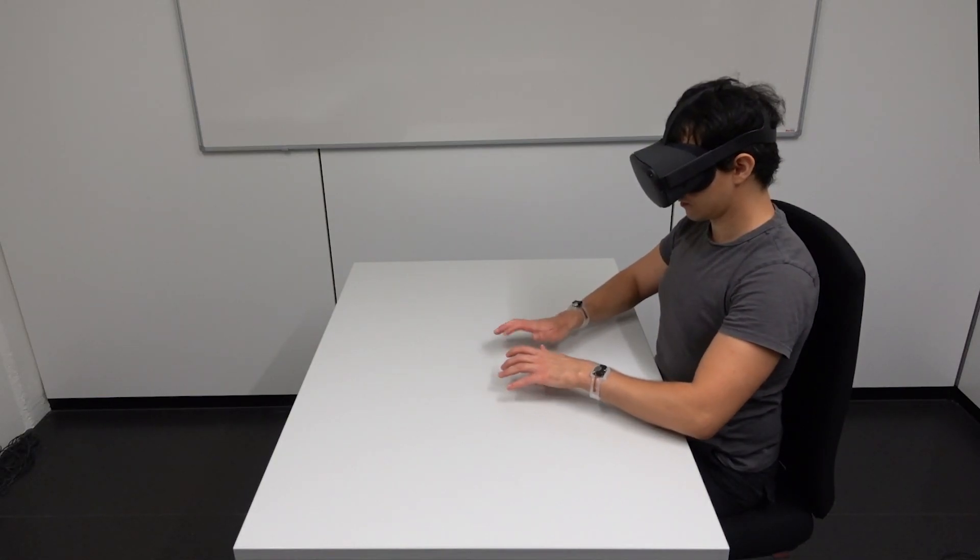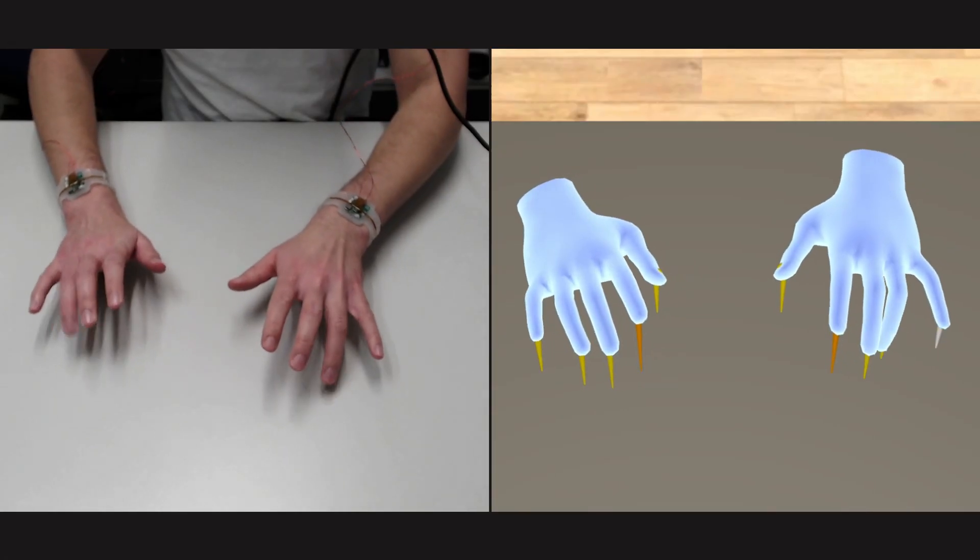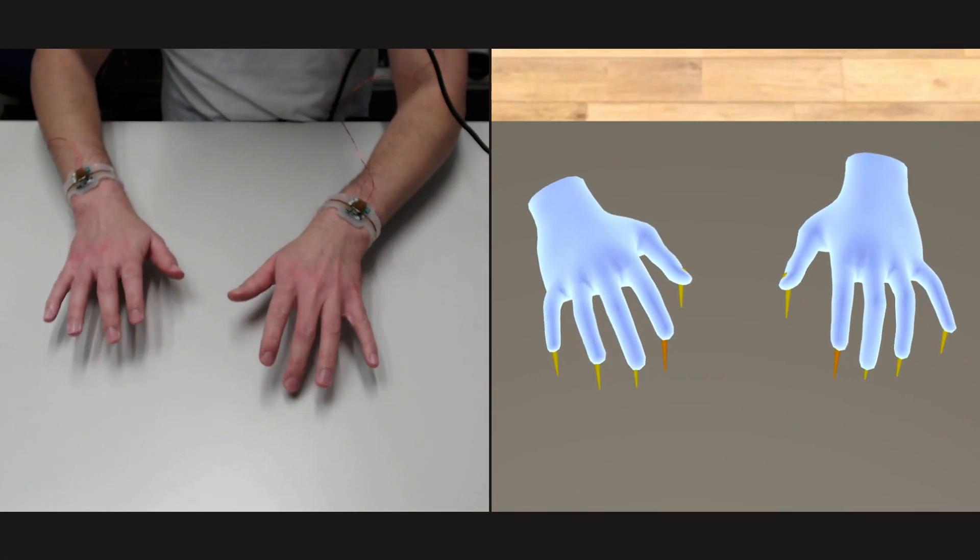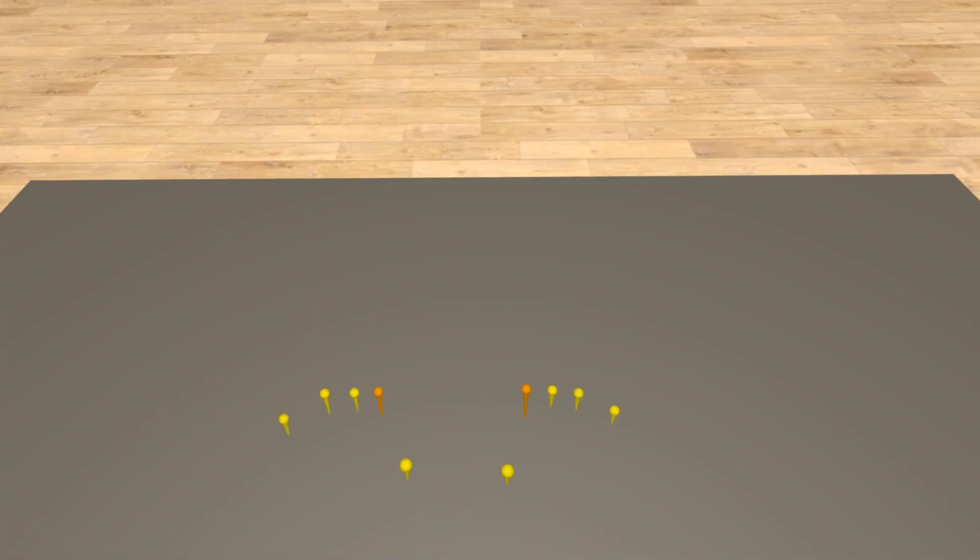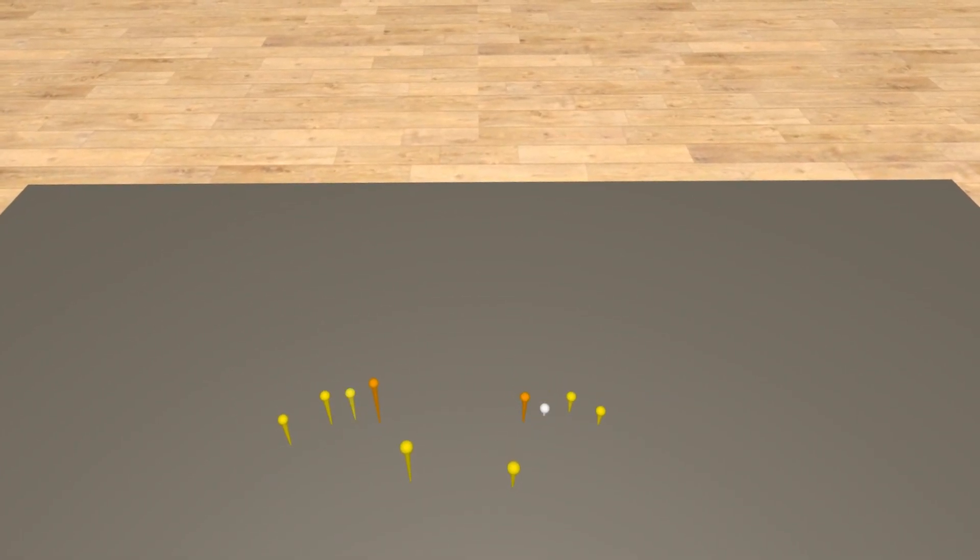TapID then fuses this tap detection and finger identification with the hand poses tracked by the headset to trigger input at the correct fingertip location in VR.